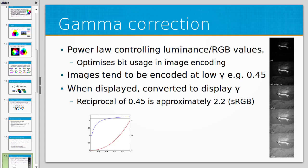Gamma is often set to 0.45 when encoding. You have broader steps between the dark colours and more information at the high end. You might see this in movies with very dark scenes, or in a sunrise where you can see banding, or in a fade-in to a scene where visible bands appear. This is because they are deliberately storing less information in low-light scenes.